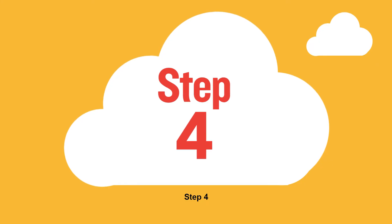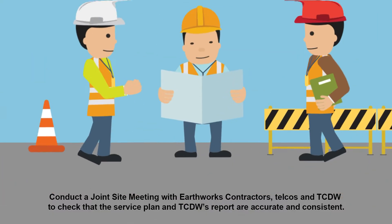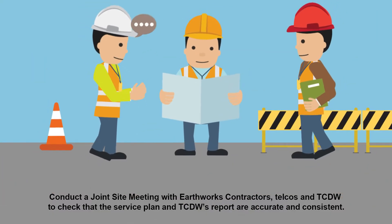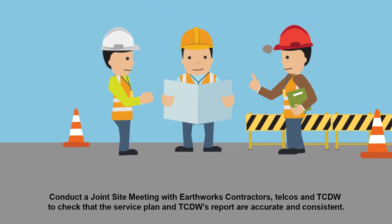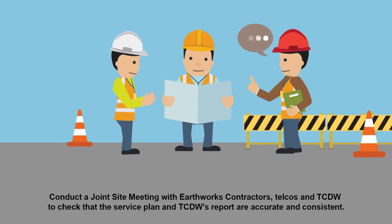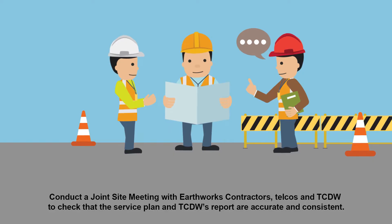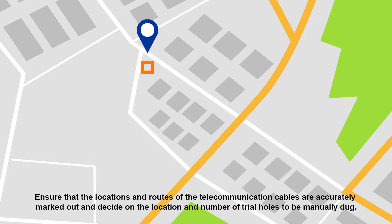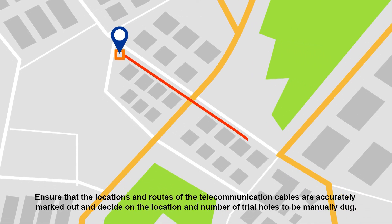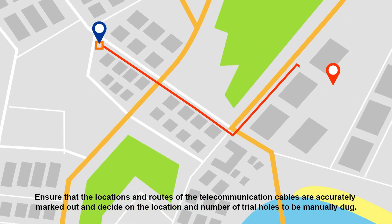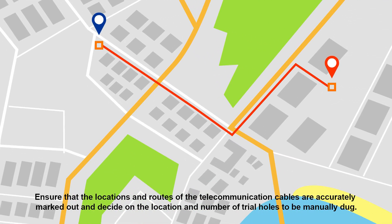Step 4: Conduct a joint site meeting with Earthworks contractors, telcos and TCDW to check that the service plan and TCDW's report are accurate and consistent. Ensure that the locations and routes of the telecommunication cables are accurately marked out, and decide on the location and number of trial holes to be manually dug.